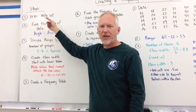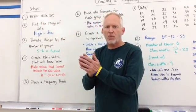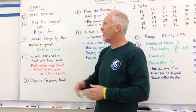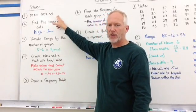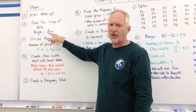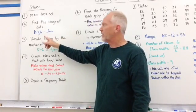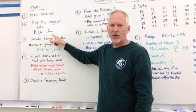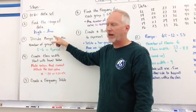Number one is order your data set. Put them in smallest to largest numerical order and that will help a lot. Next, find the range of the data. How do we find the range of the data? We take the highest number and we subtract the lowest number. That will give us the range of the data.